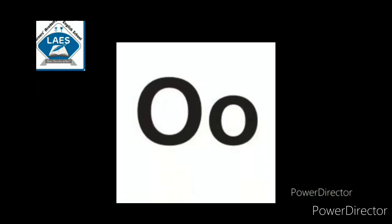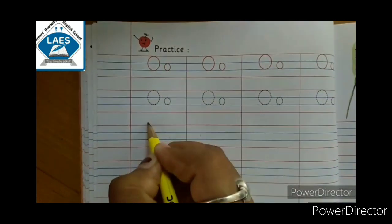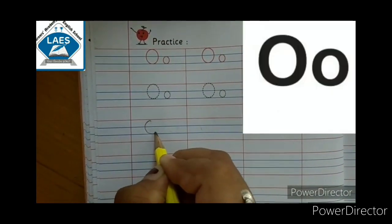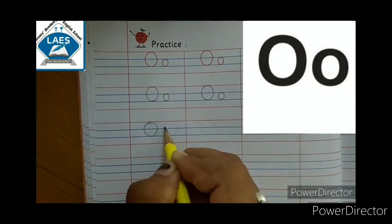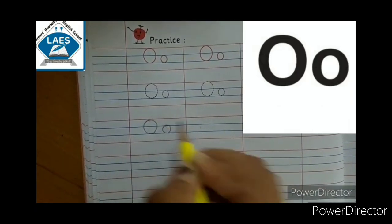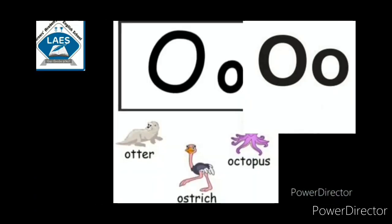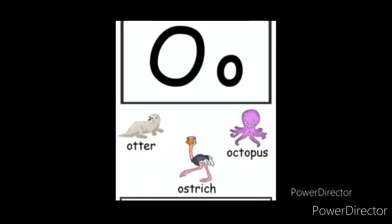Capital and small letter O. Write both the capital letter O and small letter O. O for ostrich. O for octopus.